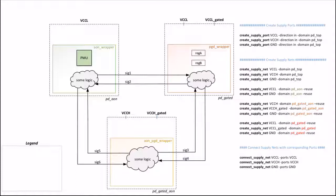Now let us create the supply ports. As we have two voltages, we have to create two supply ports: VccL for 0.9V and VccH for 1.1V, and one more for the ground supply, using the create_supply_port command. Then we create supply nets for each power domain using the create_supply_net command. At the top level we need to create supply nets for all supplies, but in other power domains we create them as per our requirement. pdaon is supplied by 0.9V, so we create a net for 0.9V and ground. For pdgatedaon and pdgated — which are power gated domains — we create three nets each: an always-on supply net, a gated supply net, and a ground net. Note how we use the reuse flag for supply nets that are common, so we don't create an extra net.